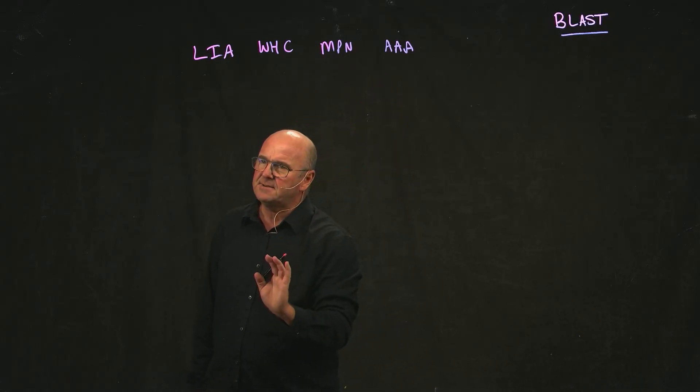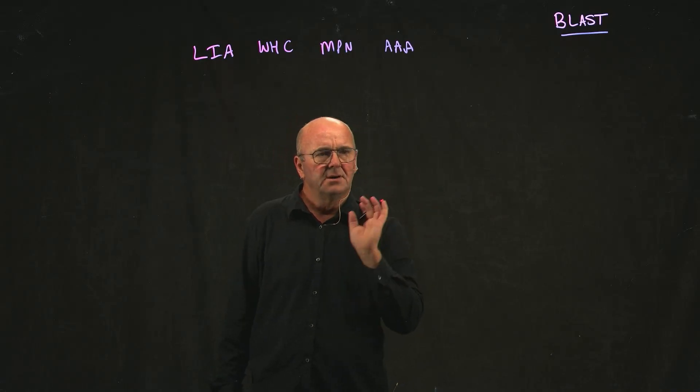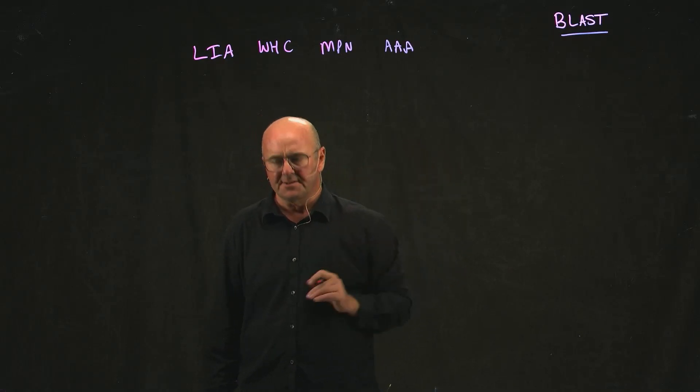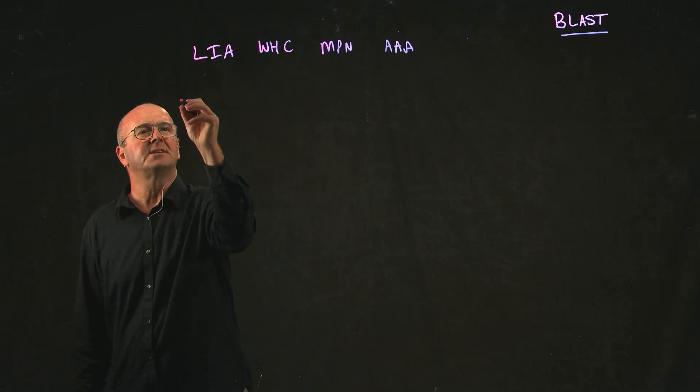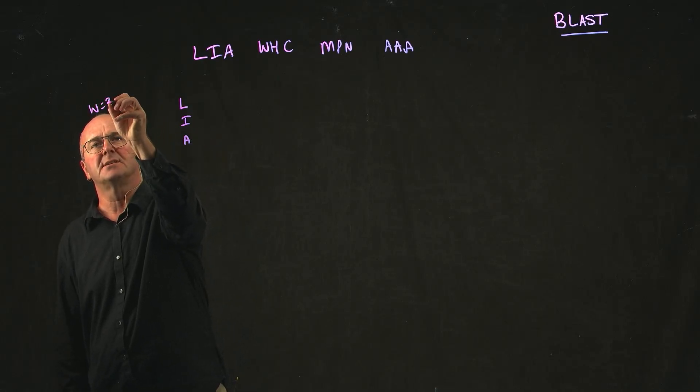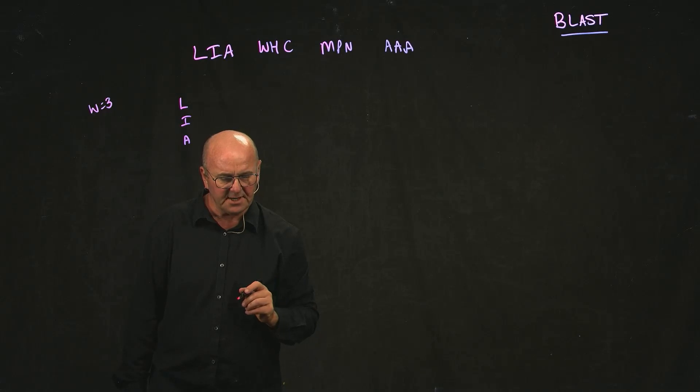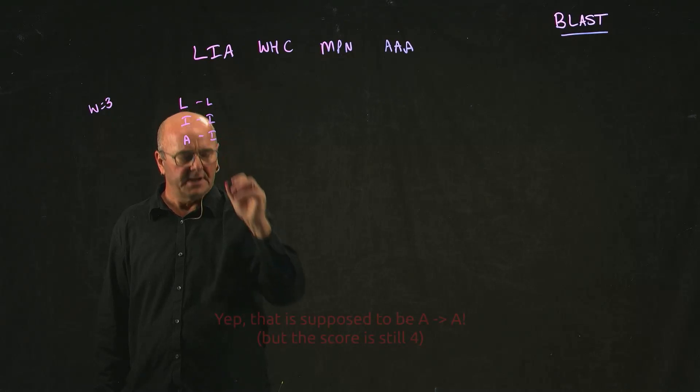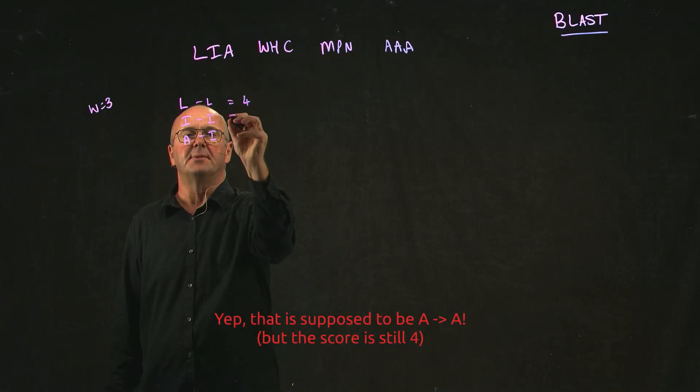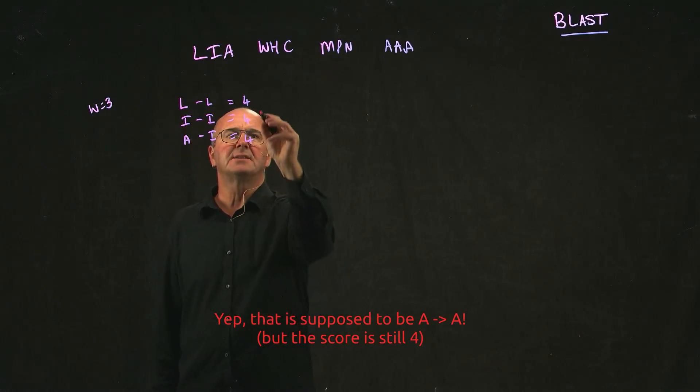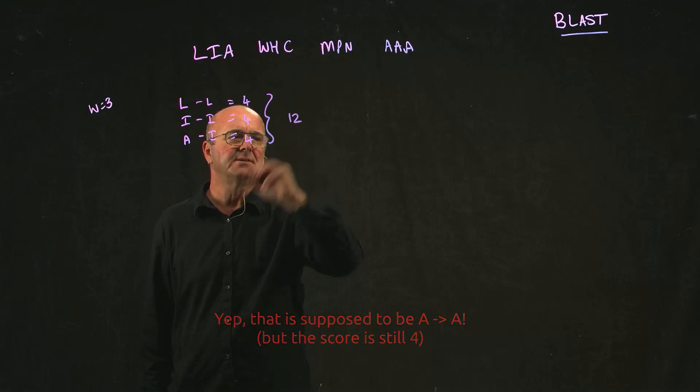But instead of indexing all of the words, what we're going to do is we're going to count what would be the score for an exact match and then index those words that are above a certain threshold. So we would, for example, take the small word LIA and this is with a word size of three. And we would say that if we go from an L to an L, we have a score of four. From an I to an I, we have a score of four. And from an A to an A, we have a score of four. And so our score would be twelve.